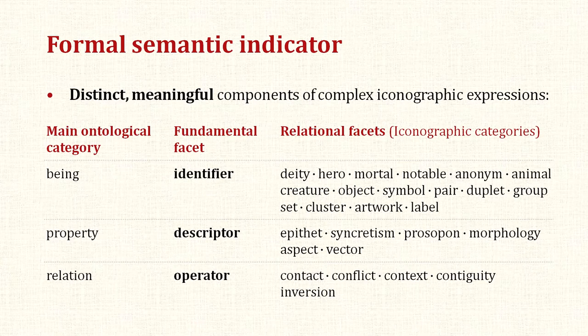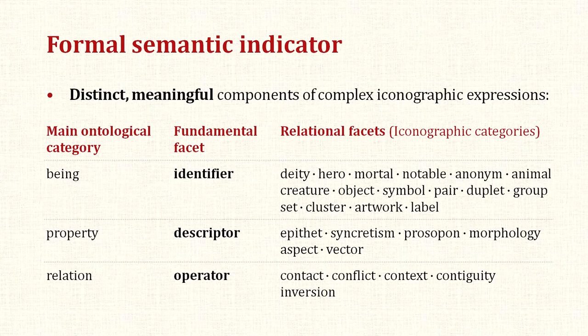A novel analytical device — the three-faceted formal semantic indicators — facilitates the development of the project's classification taxonomies. Its main purpose is to identify the distinct, meaningful components of complex iconographic expressions, and to provide detailed, exhaustive, highly formalized descriptions of those components and the relations between them. The formal semantic indicators' compositional elements correspond to three main ontological categories: beings, properties, and relations. The device is comprised of three fundamental facets — identifiers, descriptors, and operators — and also contains 27 relational facets: 16 identifiers, 6 descriptors, and 5 operators.